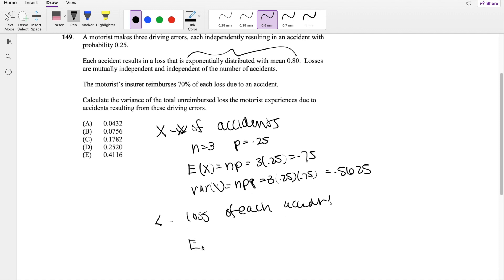So expectation of L, losses of each accident, is equal to 0.8. And then we know the variance is just equal to mean squared. So that's going to be equal to 0.8 squared, which is equal to 0.64.